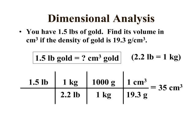So showing this a little neater, our pounds, kilograms, grams, and our final answer 35 cubic centimeters is the volume of 1.5 pounds of gold that has that density.